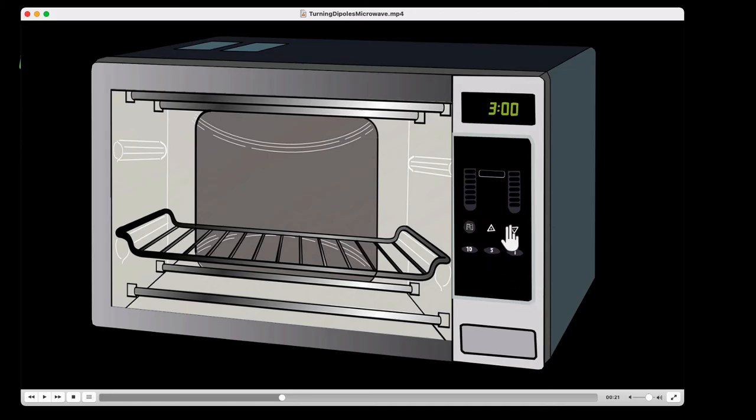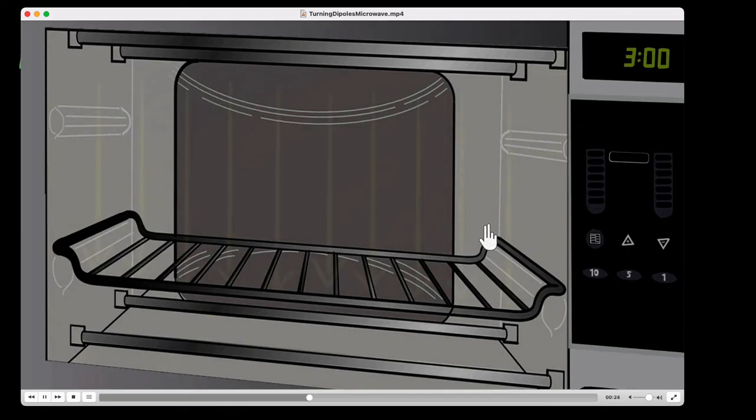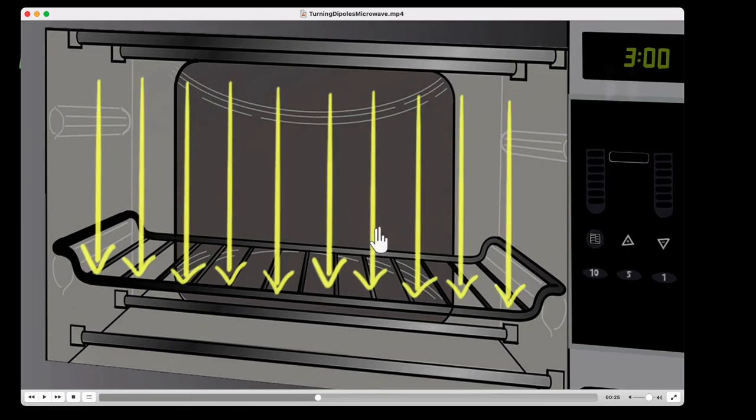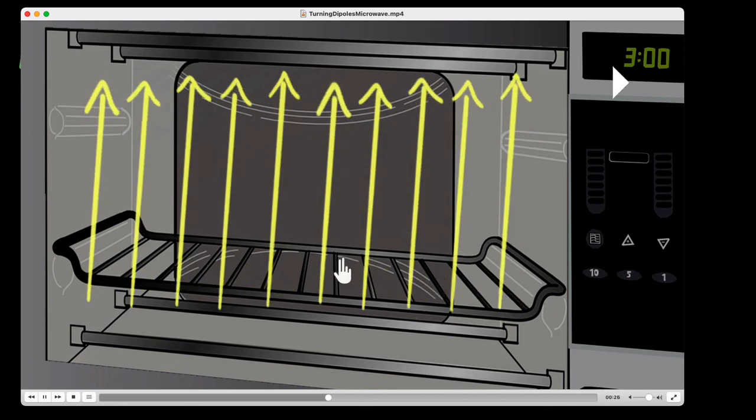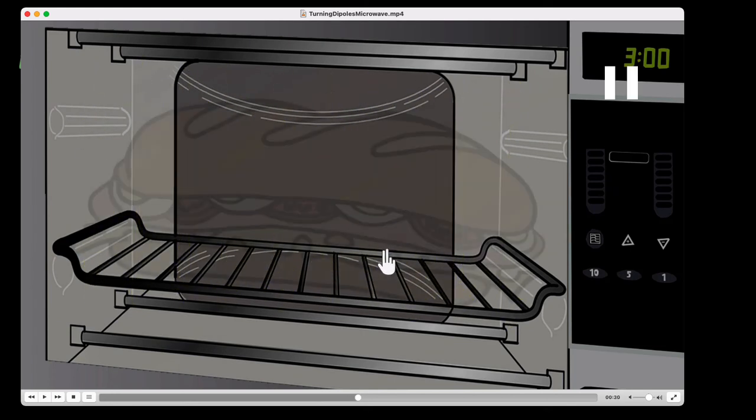So what do microwave ovens do? Well, they produce microwaves, of course. But what are microwaves? They're electromagnetic radiation, and we'll talk more about them in future videos. But what's important is that these microwaves contain flipping electric fields, and they're actually flipping at billions of times per second.